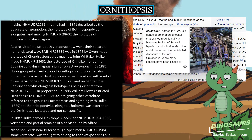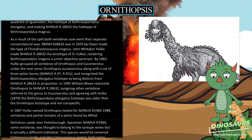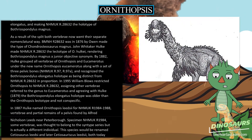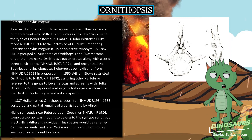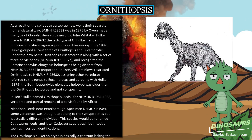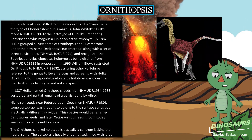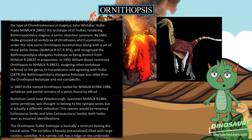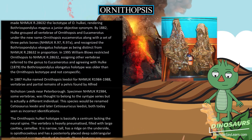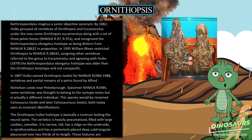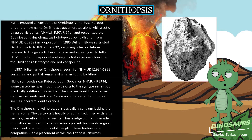In 1995, William Blows restricted Ornithopsis to NHMUK 28632, assigning other vertebrae referred to the genus to Eucamerotus and agreeing with Hulke (1879) that the Bothriospondylus elongatus holotype was older than the Ornithopsis lectotype and not conspecific. In 1887, Hulke named Ornithopsis leedsi from vertebrae and partial remains of a pelvis found by Alfred Nicholson Leeds near Peterborough. This species would be renamed Cetiosauriscus leedsi and later Cetiosauriscus leetzii, both today seen as incorrect identifications.